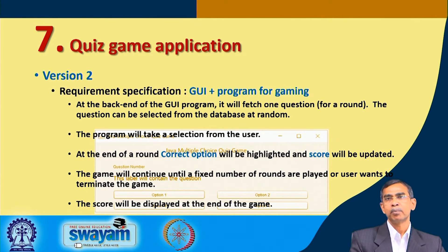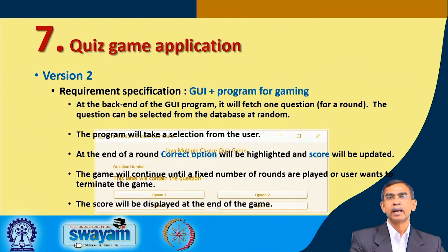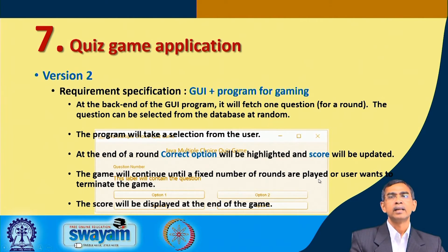You can develop the socket program for that. The socket will basically run the networking and JDBC-related program elements. The program will take a selection from the user; at the end of the round, the correct option will be highlighted and the score will be updated. The game will continue until, say, 15 rounds, or until the user selects a quit option. Finally, when the game is over, the total score the player has achieved will be displayed on the screen.